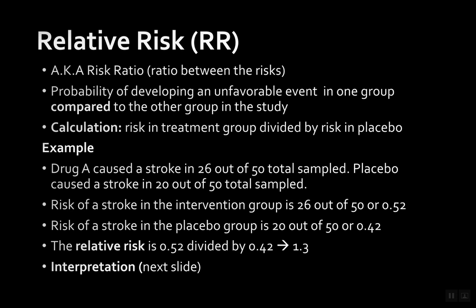Relative risk is the probability of developing an unfavorable event in one group compared to the other. The calculation is: risk in the treatment group divided by risk in the placebo group. For example, Drug A caused a stroke in 26 out of 50 sampled, and placebo caused a stroke in 20 out of 50 sampled. So the risk in the intervention group is 26/50 = 0.52, and in the placebo group 20/50 = 0.42.